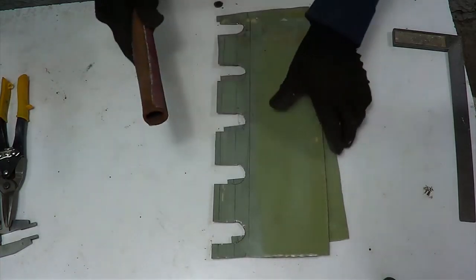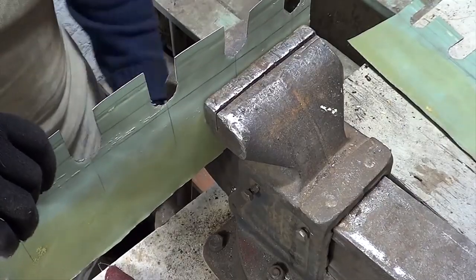We take sandpaper, clamp the blank in a vise and process the metal burrs.